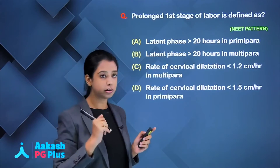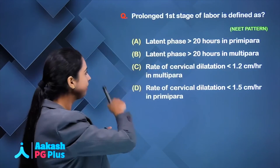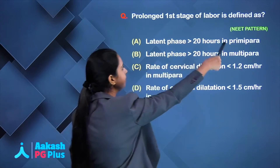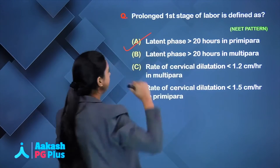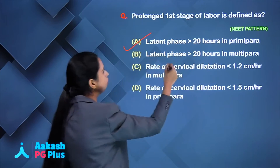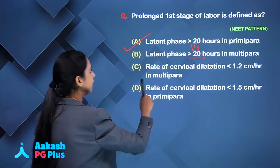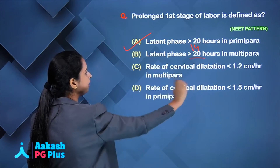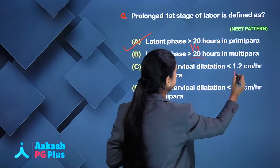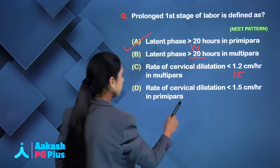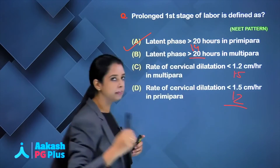Let us solve a question: prolonged first stage of labour is defined as latent phase more than 20 hours in primigravida — yes, that is correct. Latent phase more than 20 hours in multigravida — no, this number has to be 14 hours. Rate of cervical dilatation less than 1.2 cm per hour in multigravida — no, in multi this number is less than 1.5, and in prime it is 1.2. Remember these facts.